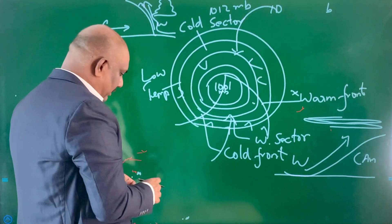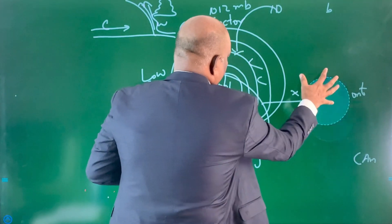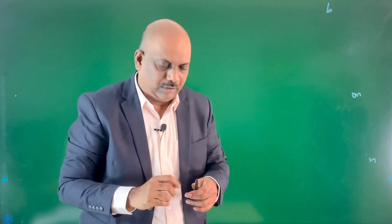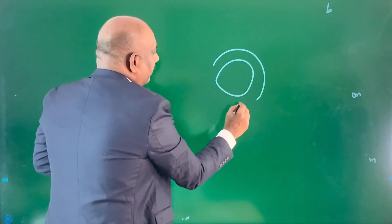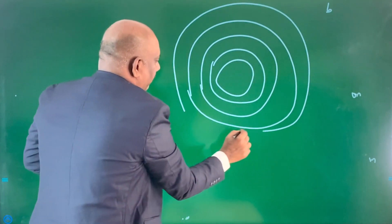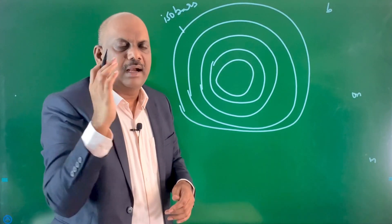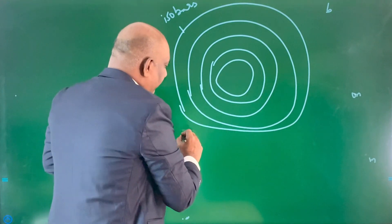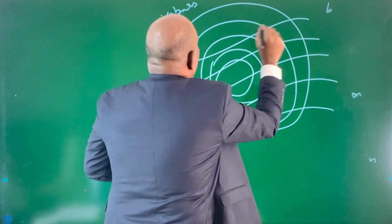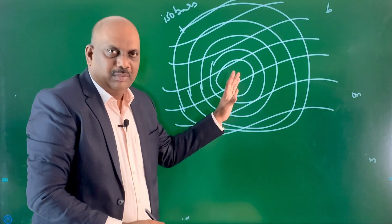One more important thing to discuss is how isotherms behave in a temperate cyclone. Isotherms generally cut the temperate cyclone at an angle — this is a very important aspect: the isotherms cut the isobars at an angle.